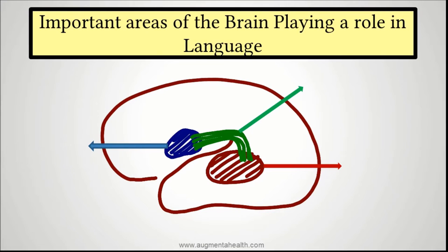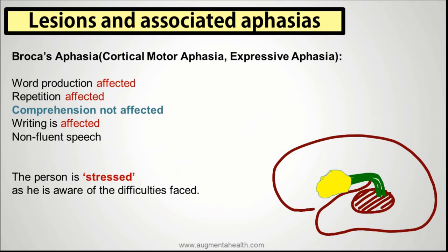Let's move on to talk about some lesions and associated aphasia. One important aphasia is Broca's aphasia, also called cortical motor aphasia or expressive aphasia. It's important to remember that word production is affected, repetition is affected, and writing is affected, which basically leads to non-fluent speech. They can definitely understand instructions because comprehension is not affected.